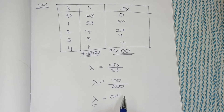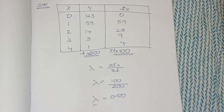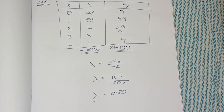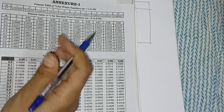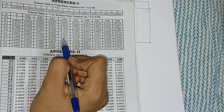So lambda = 0.50. To do Poisson distribution, you need to take the Poisson distribution table into your examination — it is allowed. Some colleges will provide the table; otherwise you need to carry it with you. You should take a signature from your invigilator on the table, since some squads may suspect malpractice. This is the Poisson distribution table, which is allowed in the examination.